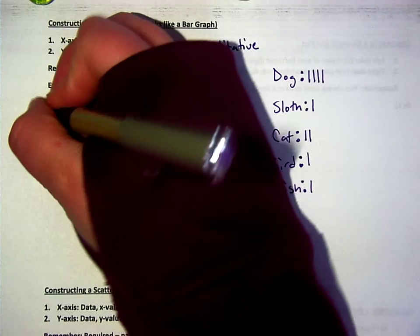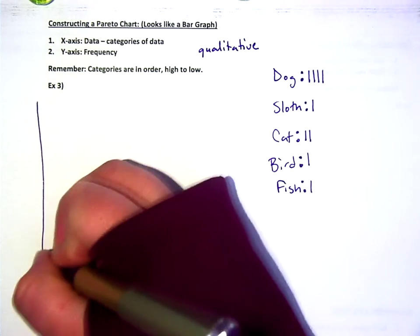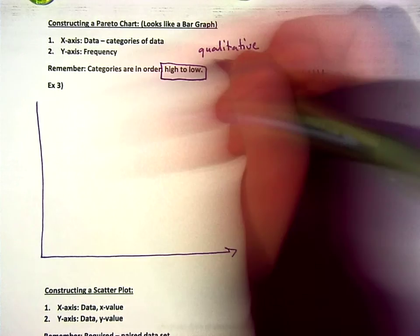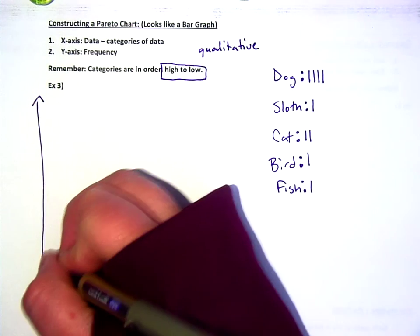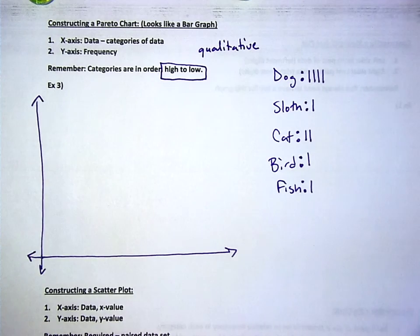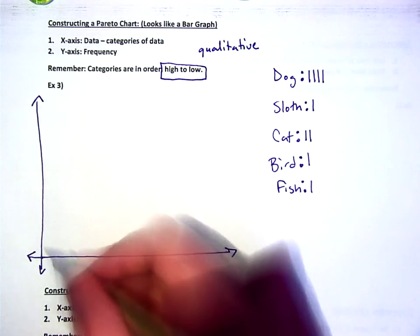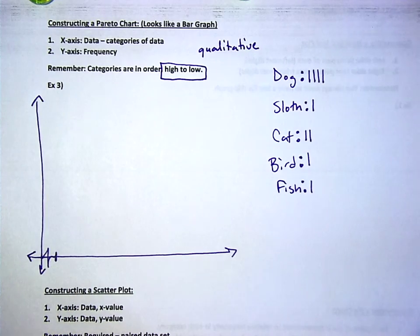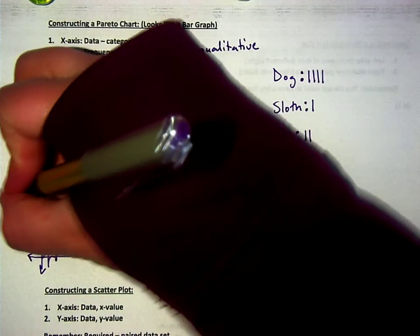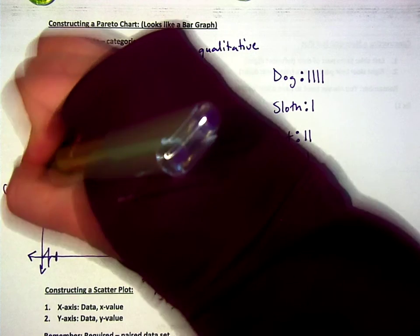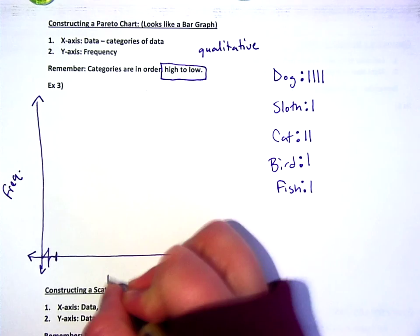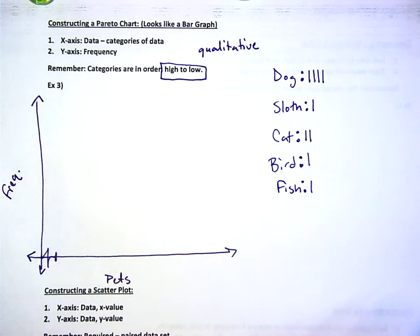Okay, so a Pareto chart is like a bar graph. And they always go high to low. On the side here is frequency. Down here are categories. I'm going to write pets.